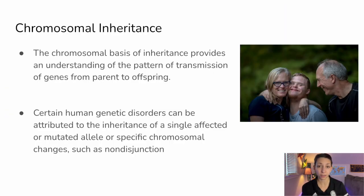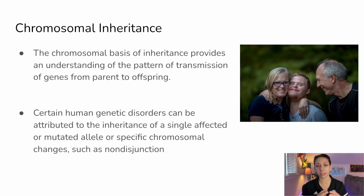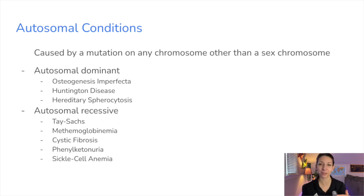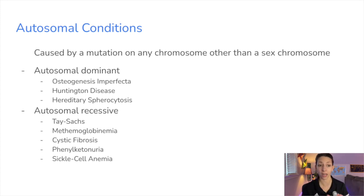Some genetic differences in individuals are due to single allele or single gene changes, and others are due to changes in entire chromosomes. A lot of times this happens because of non-disjunction, or when a chromosome doesn't separate properly during meiosis. Many genetic disorders are called autosomal because they're occurring on any chromosome that's not a sex chromosome — all the chromosomes except for sex chromosomes are autosomes. Autosomal conditions are caused by mutations on chromosomes that are not sex chromosomes.